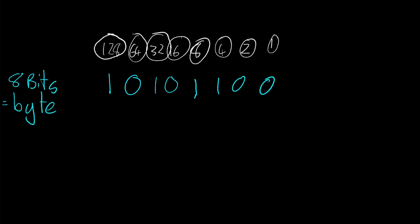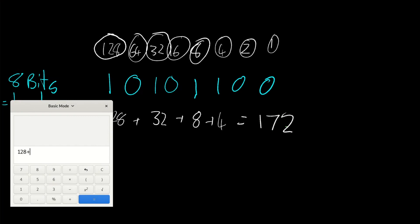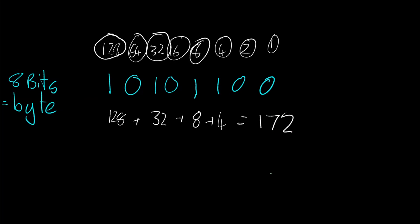Using the same method, we check which bits are set. The ones position is zero — doesn't matter. The twos position is zero. The four is set, the eight is set, the sixteen is zero, the thirty-two is set, and the one-twenty-eight is set. So we add four plus eight plus thirty-two plus one-twenty-eight, which gives us one-seventy-two in decimal.